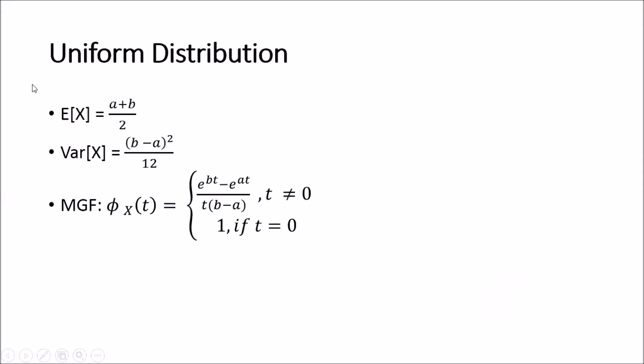The uniform distribution has these following equations for its expected value, variance, and the moment generating function. In later videos, I will be deriving all of these for you. But I do highly recommend that you memorize these results because they will speed up your ability of doing calculations in a test or if you're doing homework or assignments. The expected value is (a+b)/2.